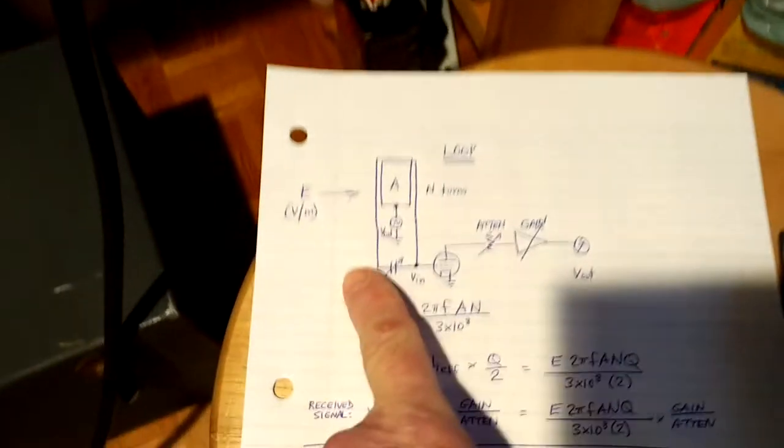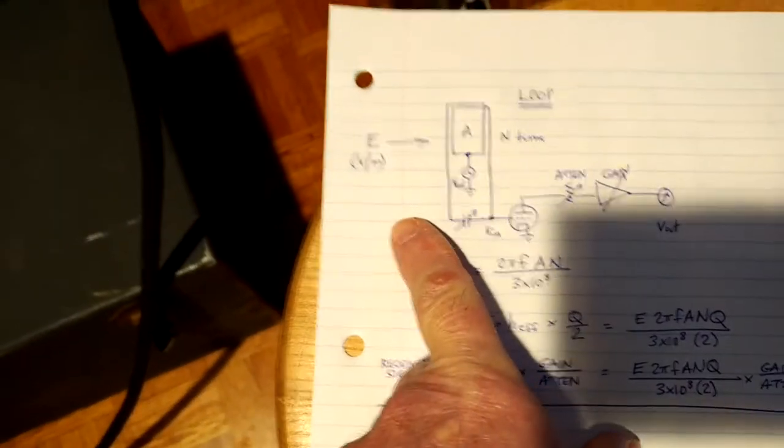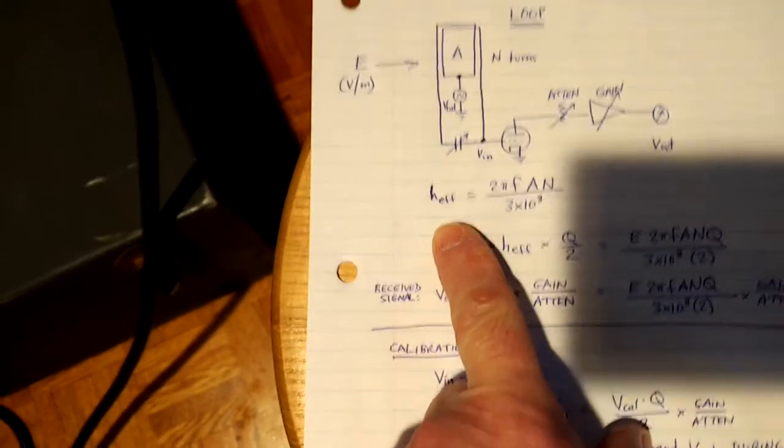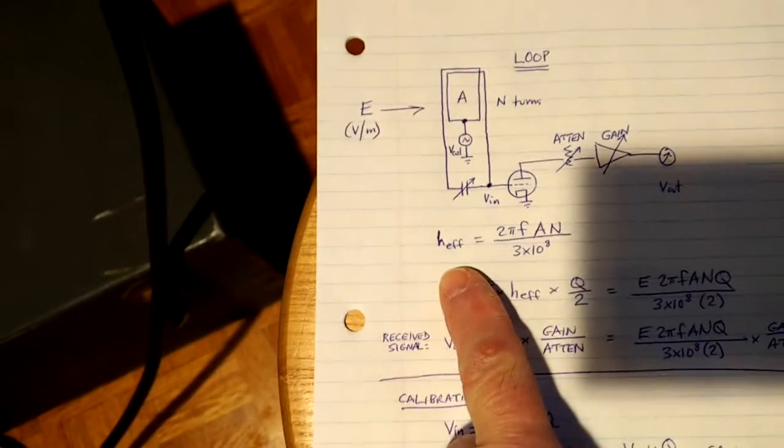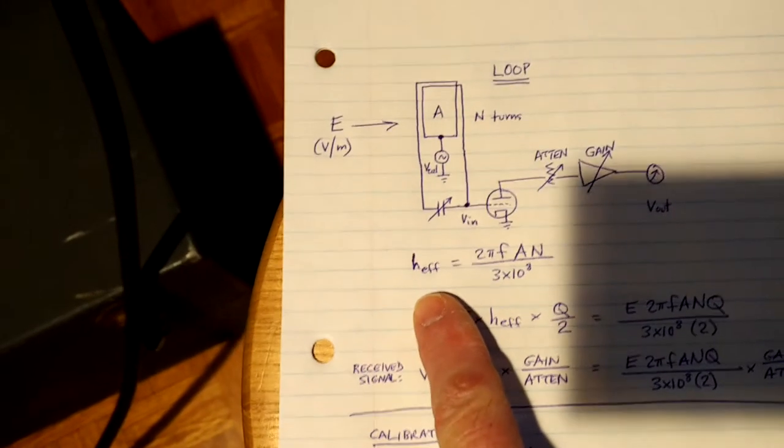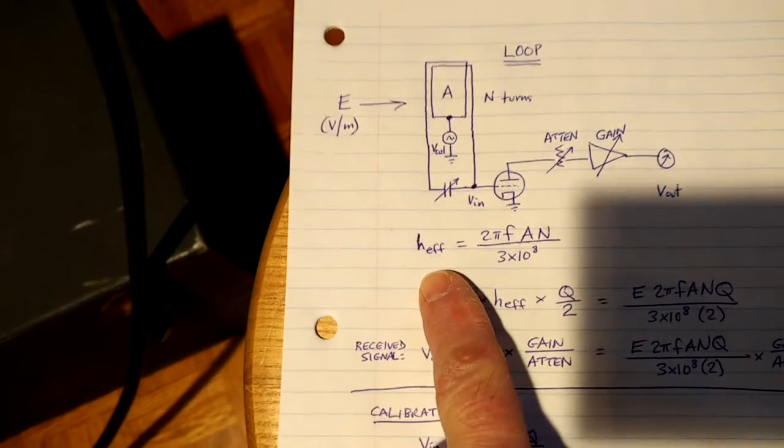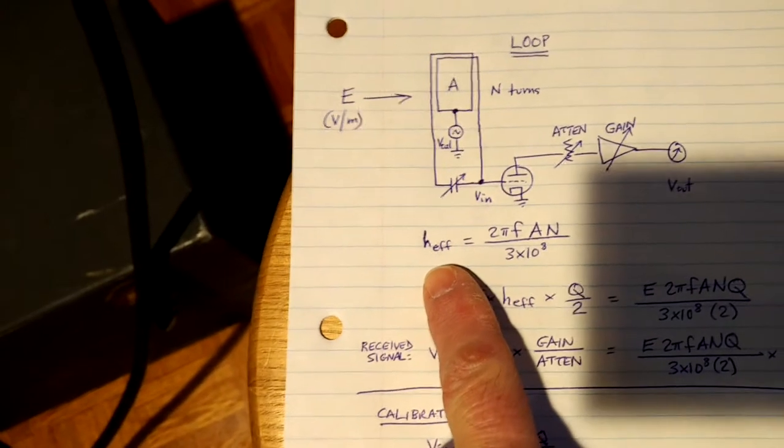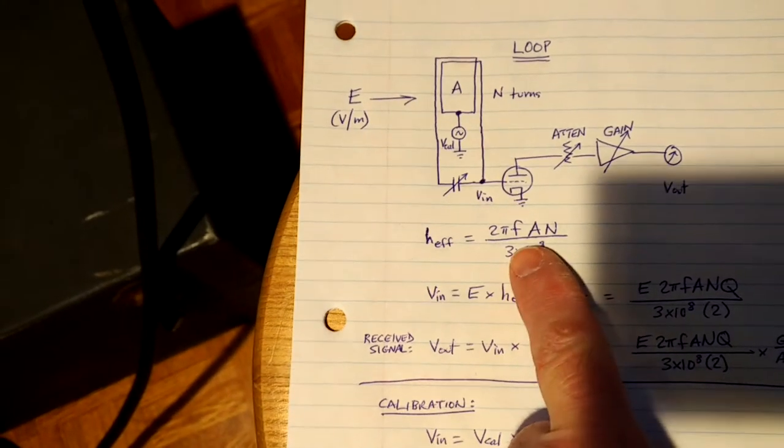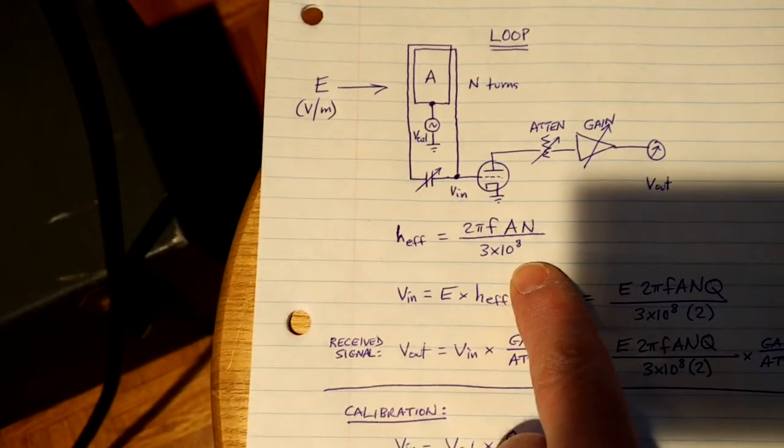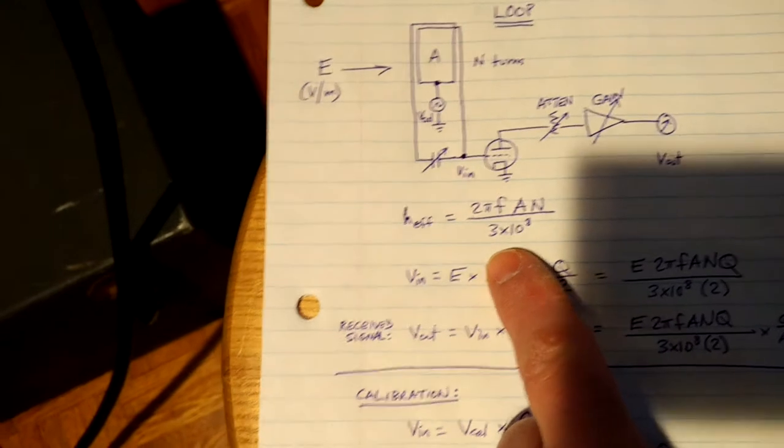So when a loop is in an electric and magnetic field, an electromagnetic field, one can calculate the induced voltage in the loop by first calculating the effective height or length of that antenna as a linear element. And for small loops that are much smaller than the wavelength, which is the case here, this formula applies. The effective height of the loop is 2π times the frequency times the area of the loop and the number of turns in the loop, divided by 3 times 10 to the 8th.